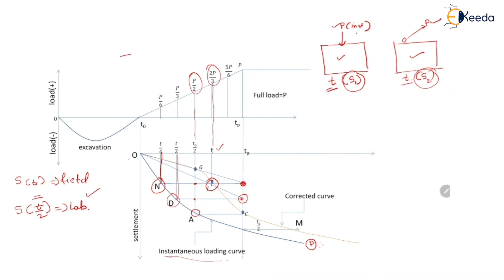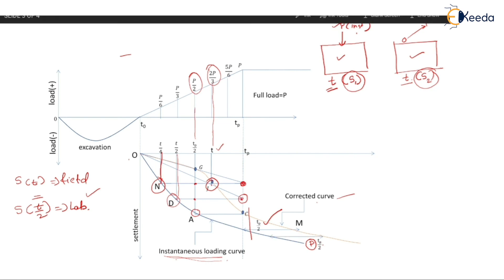If we extend the instantaneous curve and the corrected curve beyond the loading period — that is, beyond Tp — then the horizontal offset between the instantaneous curve and the corrected curve will be Tp/2. This means that beyond the loading period, the horizontal offset between the instantaneous loading curve and the corrected field curve remains constant and is equal to Tp/2.